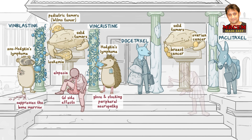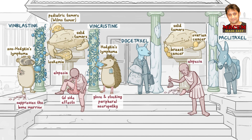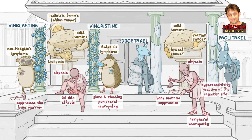For side effects, there's a janitor cleaning the statue. He's also bald for alopecia, and he's sweeping away some broken bones, representing bone marrow suppression. His hands and feet are wrapped in bandages for peripheral neuropathy, and there is a syringe sticking out of his arm which is covered in a red rash — helping you remember that these drugs can cause a hypersensitivity reaction at the injection site.